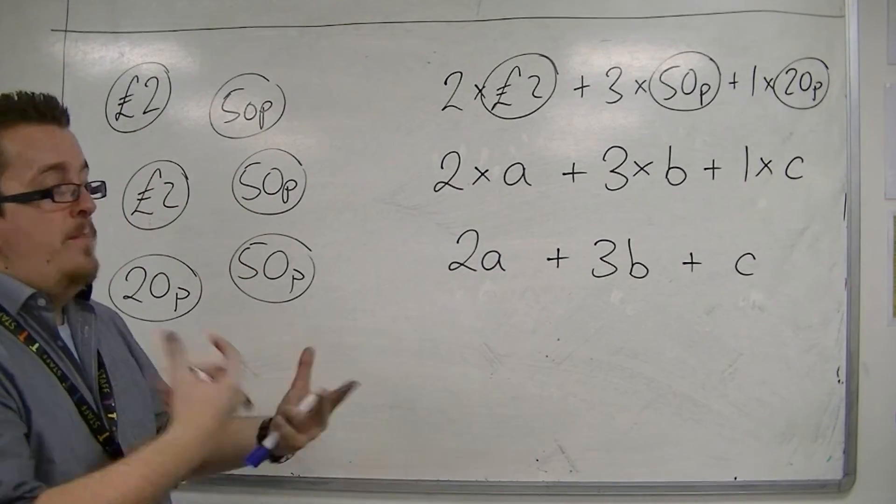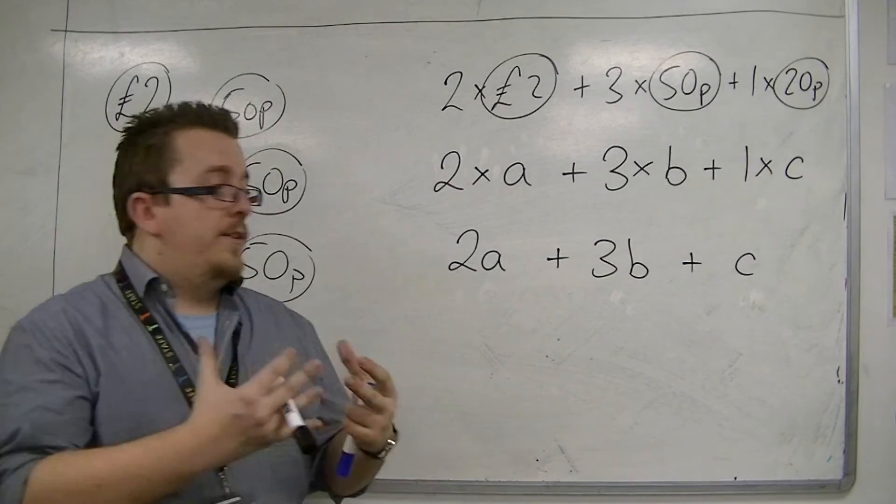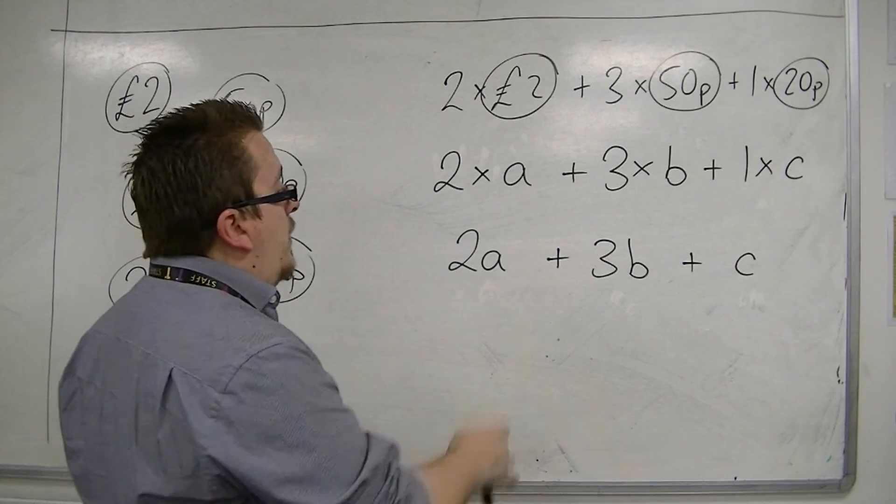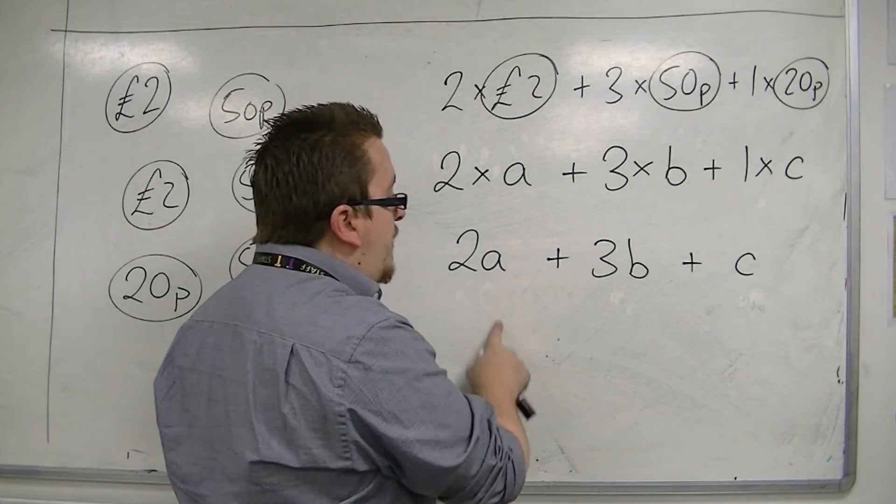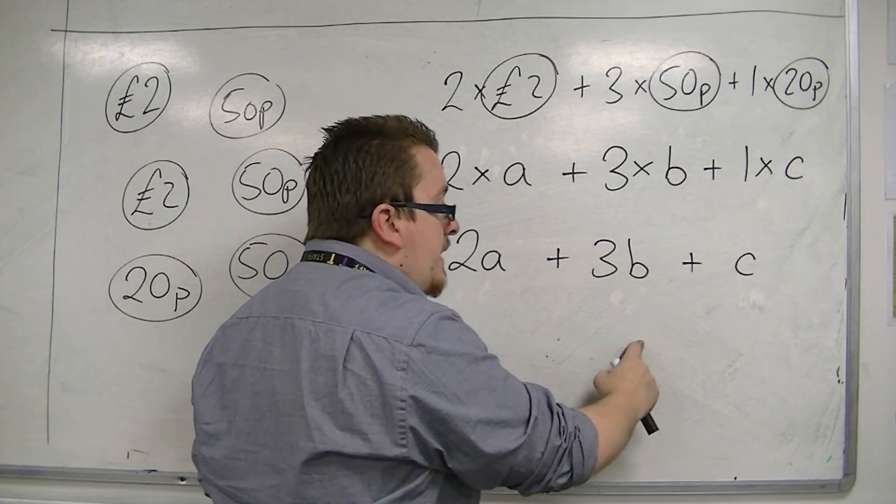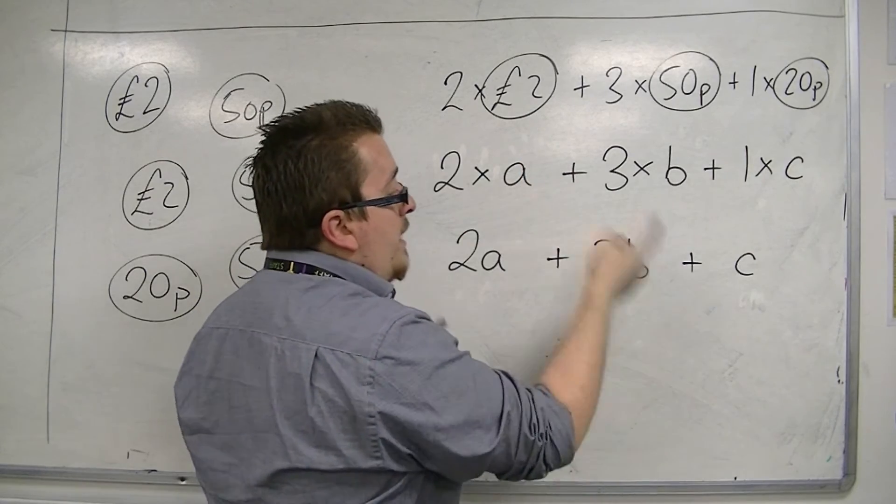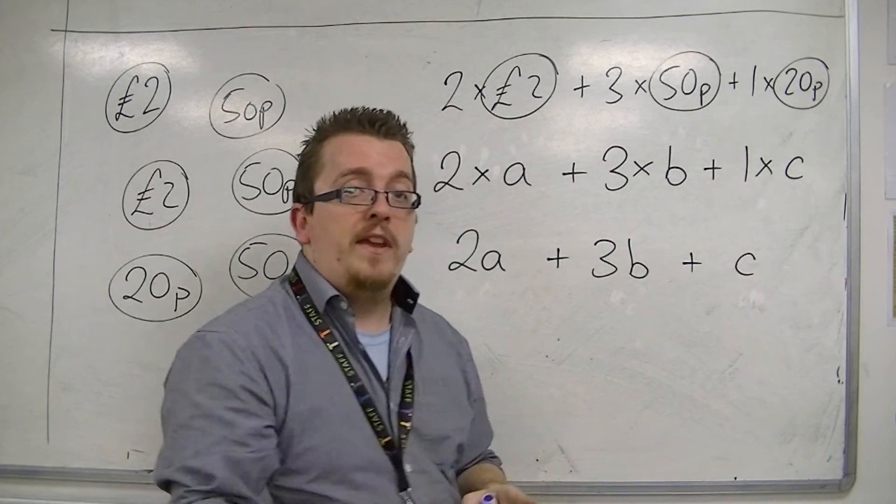It could be any particular item. But, the key thing is that the A is representing something different to the B. And likewise, A and B are two different things to the C.